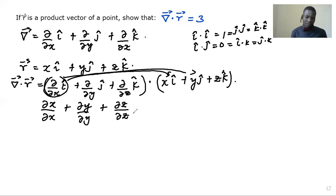Okay, so we have that and that is, this is actually one, this is actually one, this is actually one. So one plus one plus one, what we get is three. So that is equal to three.